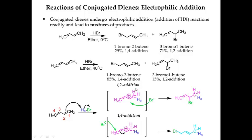For 1,2 addition, bromine simply adds directly to the positive charge and you generate the 1,2 product. For 1,4 addition, bromine adds to carbon 4, which shifts the double bond over to stabilize the positive charge, and then you get the 1,4 product.